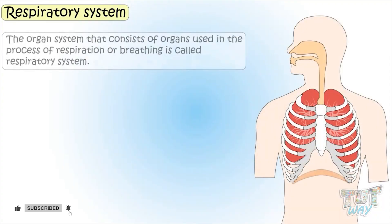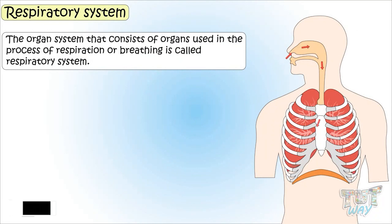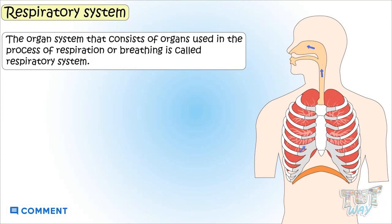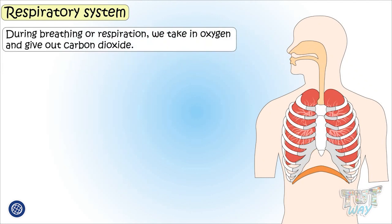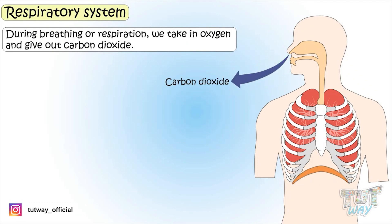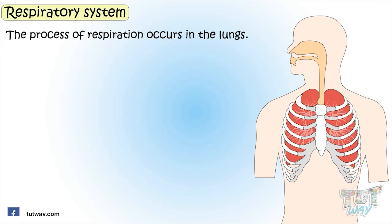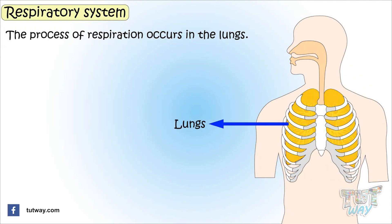The organ system that consists of organs used in the process of respiration or breathing is called the respiratory system. During breathing or respiration, we take in oxygen and give out carbon dioxide, and the process of respiration occurs in the lungs.